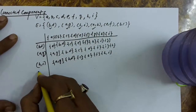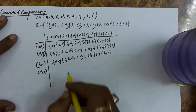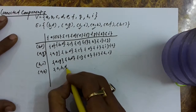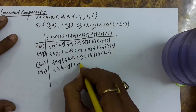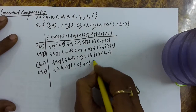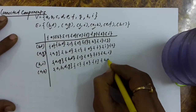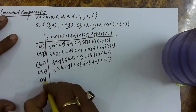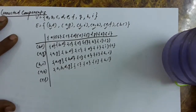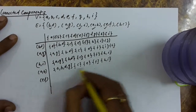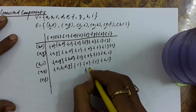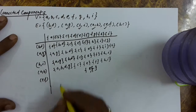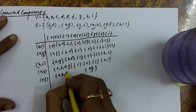The next edge is A-B. These two will be combined: A-B-D-G. C is a different set, E is a different set, F is a different set, and H-I is a different set. The next edge is E-F, so for the E-F edge these two sets will be combined — we make a union of these two sets.